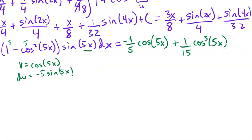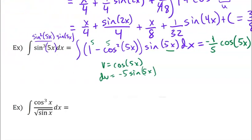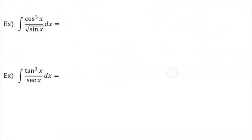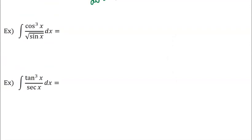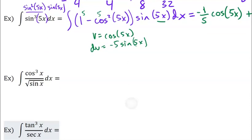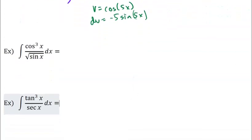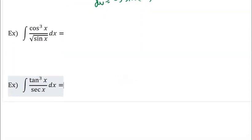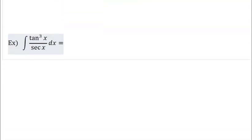Cosine cubed of 5x plus C. I'm going to skip the next one because it's pretty similar to the one we just did — except we're going to use fractional exponents — but it's still going to use the power rule with the Pythagorean identity. But I want to hop down to this one just so we can see something other than sine and cosine.